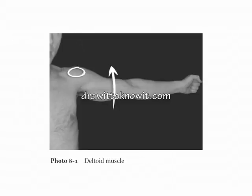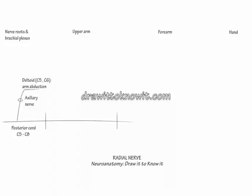The axillary nerve innervates the deltoid muscle — abduct your arm to demonstrate its action. Continue the line through the upper arm. Unlike the median and ulnar nerves, the radial nerve does have important sensory and motor branches in the upper arm.